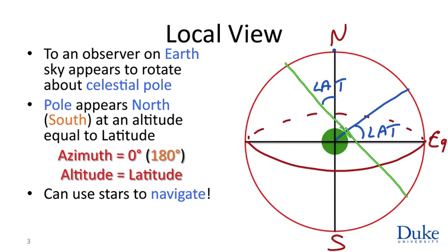The other thing that this diagram shows us is that if this observer looks directly overhead, he finds his zenith and his zenith is over here.